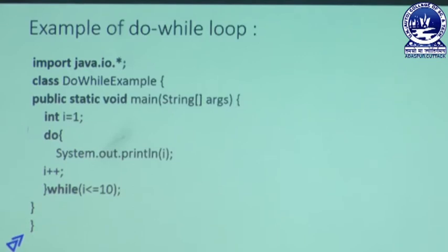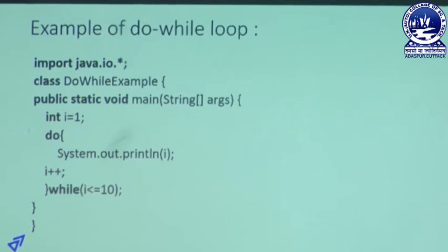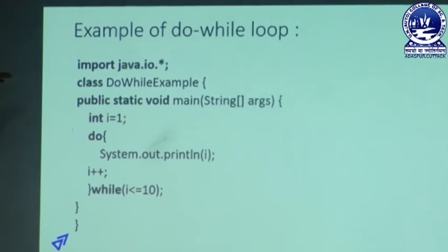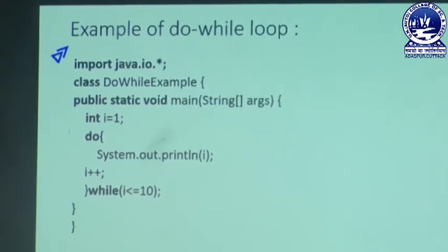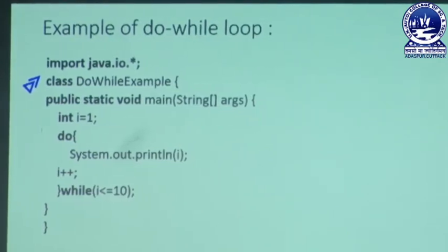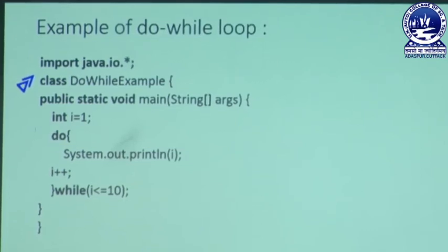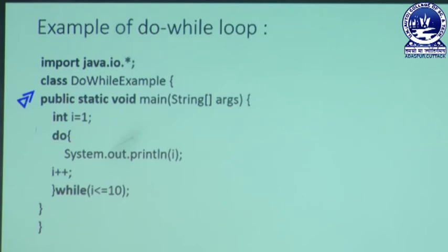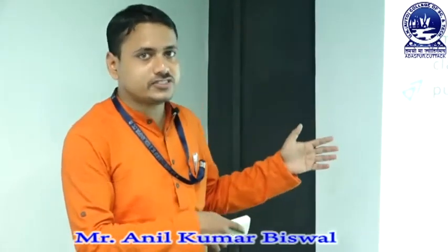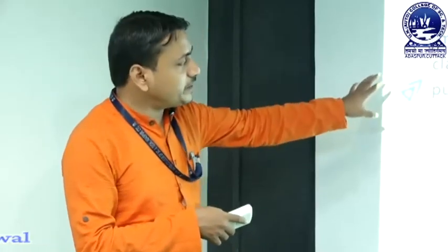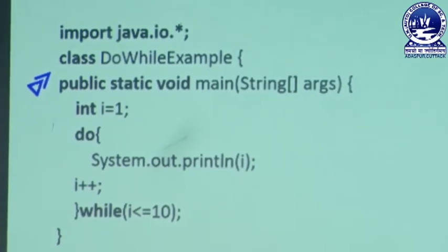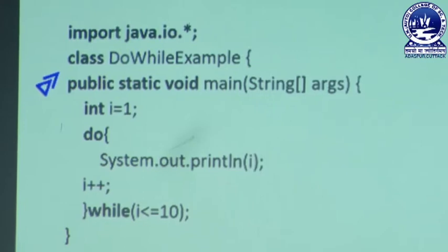This is a simple example already discussed as a while-loop, now converted to the do-while loop structure. In that program, we import the Java IO package, and we may also import the util package if making it dynamic. Then we write the class named 'do-while-example'. In that do-while program, we convert the previous while-loop program to a do-while structure. In the do-while structure, we write public static void main with parameter String args. Inside the block, we declare an integer variable 'i equal to 1'.